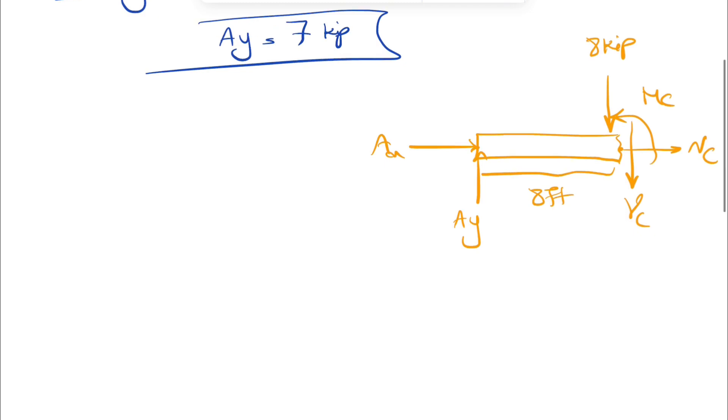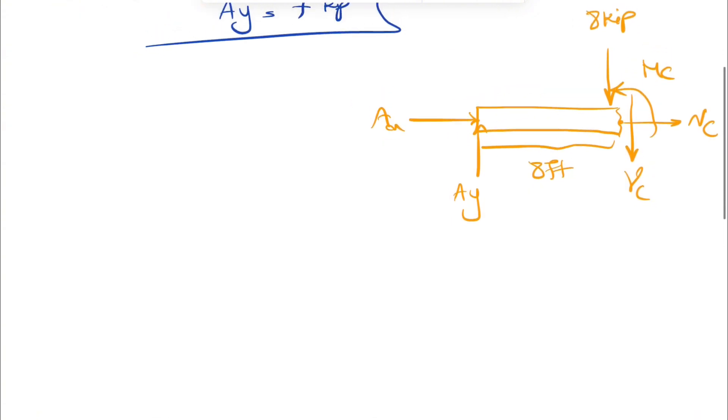We're going to use our equilibrium equations for the new free body diagram. We're going to have sum of all forces in x equals 0. We already figured that our Ax is actually 0. So that means we only left with Nc. So the normal force at point C is 0.